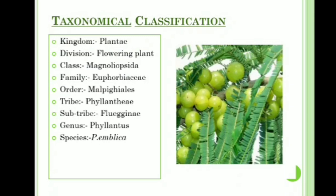Taxonomical classification: the kingdom of Amla is Plantae, division is flowering plant, class is Magnoliopsida, and family is Euphorbiaceae. The order of Amla is Malpighiales, the tribe is Phyllantheae, sub-tribe is Phyllanthinae, genus is Phyllanthus, and the species is emblica.